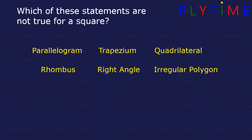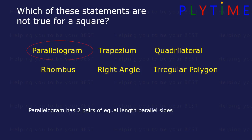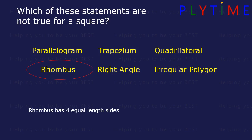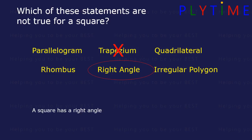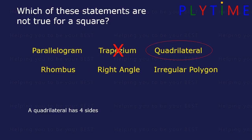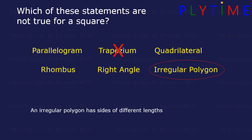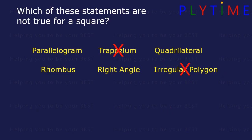Which of these statements are not true for a square? A parallelogram has two pairs of equal length parallel sides — yes, that's true of a square. A rhombus has four equal length sides — that's true of a square. A trapezium has one pair of parallel sides and one pair of equal length sides — that's not true of a square. A square has a right angle — in fact it has four, so that's true. A quadrilateral has four sides — that's true of a square. An irregular polygon has sides of different lengths — so that's not true of a square. The statements that are not true are trapezium and irregular polygon.